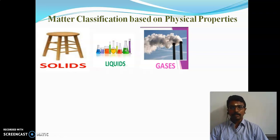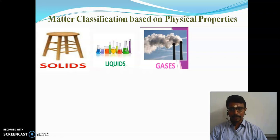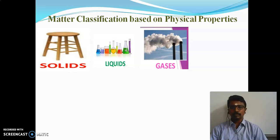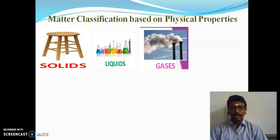What is meant by solid? A solid has a definite shape and a definite volume. Liquid does not have a definite shape, but it does have a definite volume. Gases have neither a definite shape nor a definite volume. Also, solids are rigid.